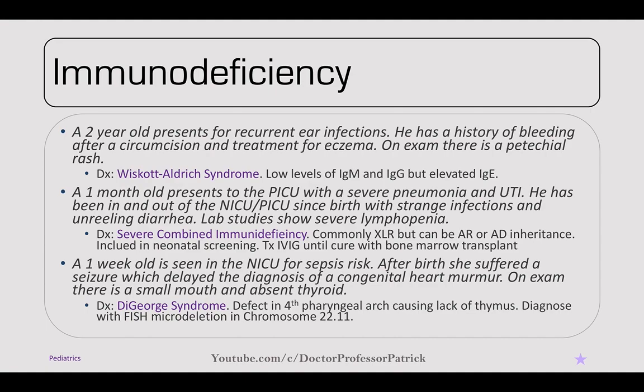A one-week-old in the NICU for sepsis suffered a seizure after birth, which delayed diagnosis of a congenital heart murmur. On exam, there's a small mouth and absent thyroid. This is DiGeorge syndrome — a defect in the fourth pharyngeal arch causing lack of a thymus. It also lacks parathyroid glands, causing hypocalcemia, seizures, and tetany. Diagnosis is by FISH looking for microdeletion at chromosome 22q11.